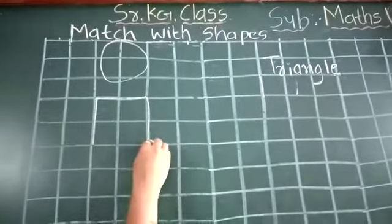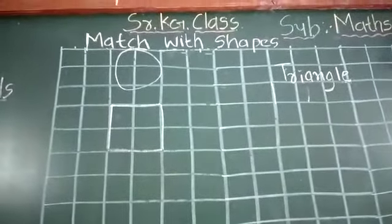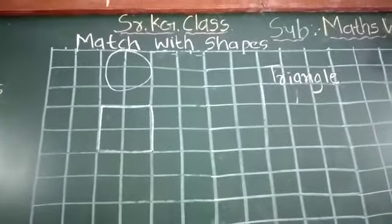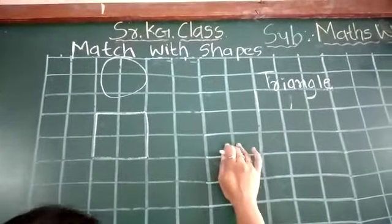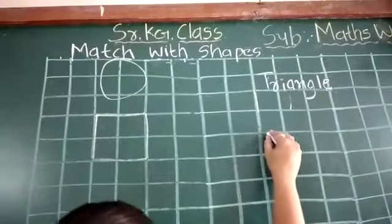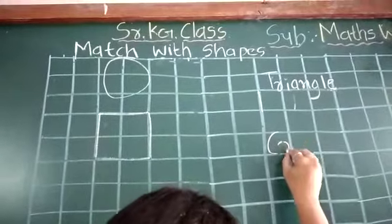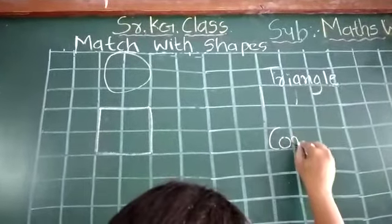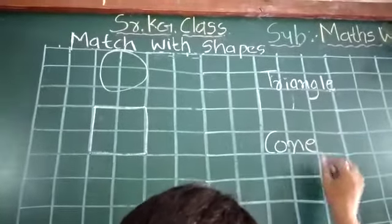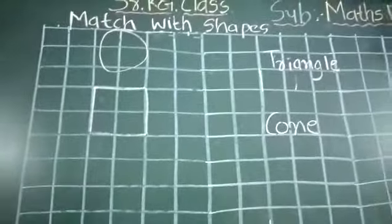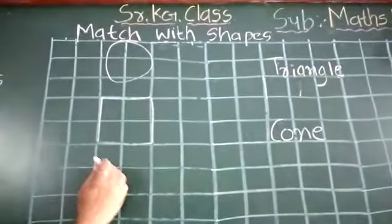Square. Draw with me. Again leave three boxes. Write here C-O-N-E. Again leave one box.